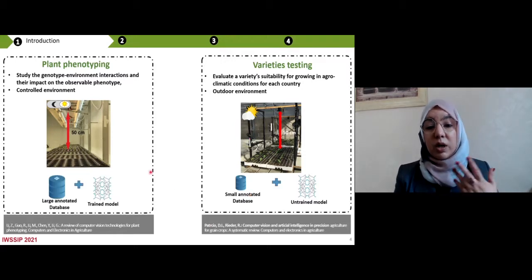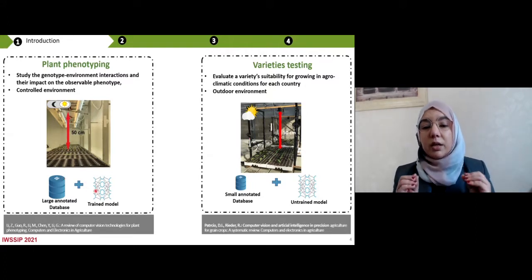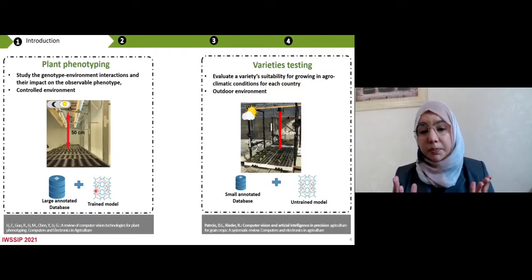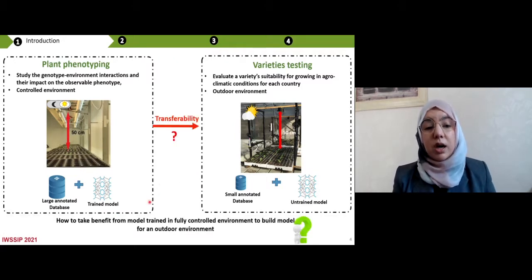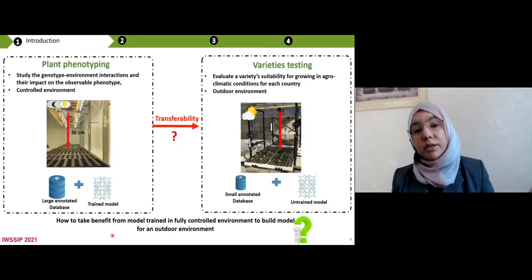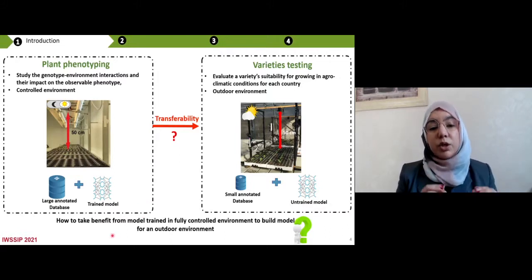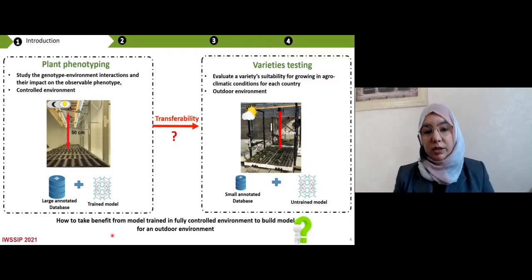So in control environment, we have several studies already done. And we have a large annotated data set and trained model, because we can do experience all year length. But it's not the case for outdoor environment because our work is related to the season of plants. So here, the question is how to take benefit from model trained in fully controlled environment to build a model for outdoor environment.